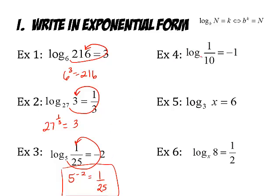On 4, look at this - there's no base down here. Guess what? If there's no base, that base is a 10. It's what we call the common log. So in this one, it's 10 to the negative 1 power gives me 1 over 10.